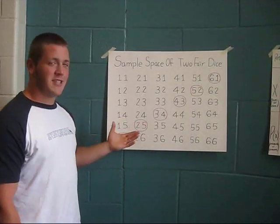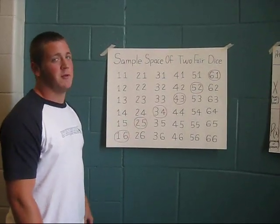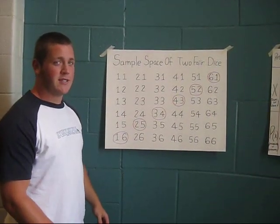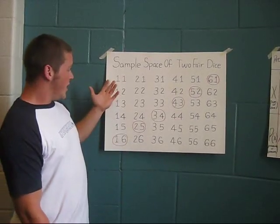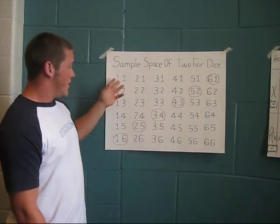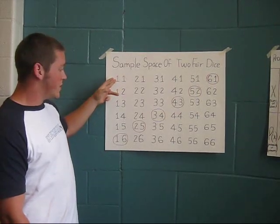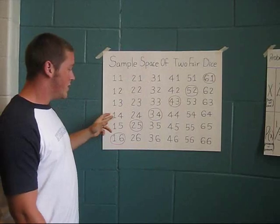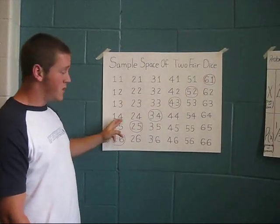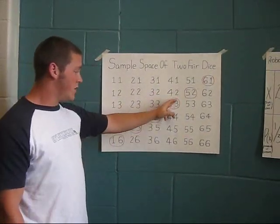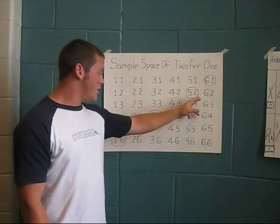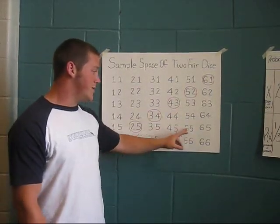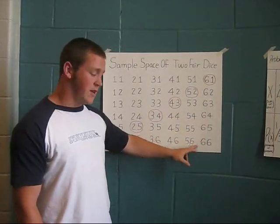This chart shows the sample space of 2 fair dice being rolled. Each die has 6 fair sides. This accounts for rolling a sum of 2, a sum of 3, a sum of 4, a sum of 5, a sum of 6, a sum of 7, a sum of 8, a sum of 9, a sum of 10, a sum of 11, and a sum of 12.